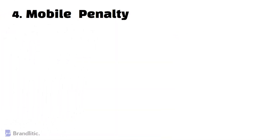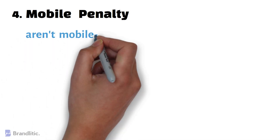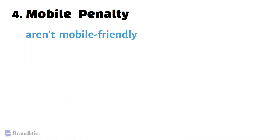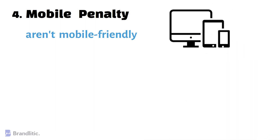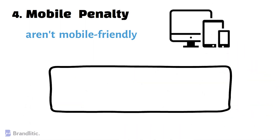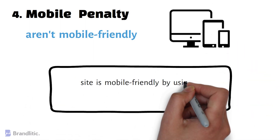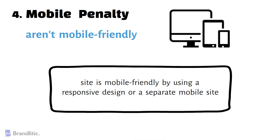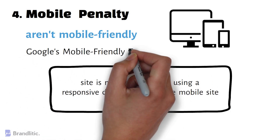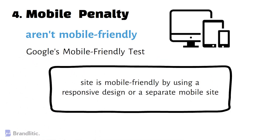The Mobile Penalty targets sites that aren't mobile-friendly. To fix this penalty, you need to make sure that your site is mobile-friendly by using a responsive design or a separate mobile site. Google's mobile-friendly test can help you identify any issues with your site's mobile-friendliness, and a link for the test is given in the description below.